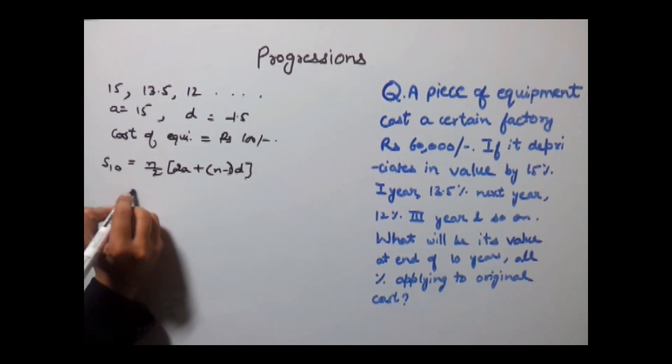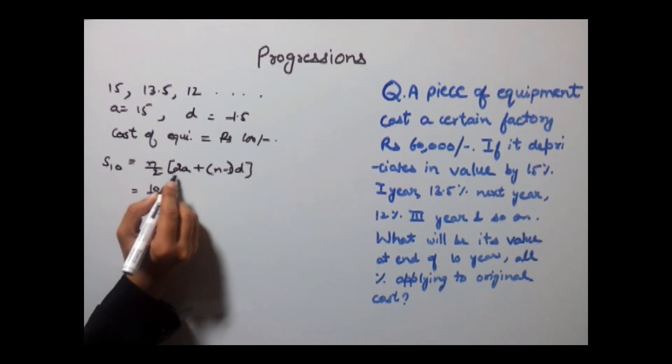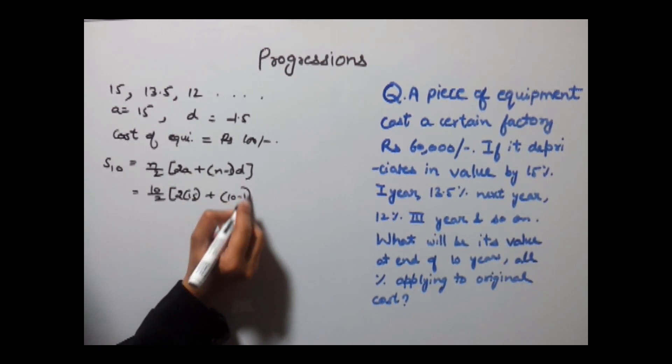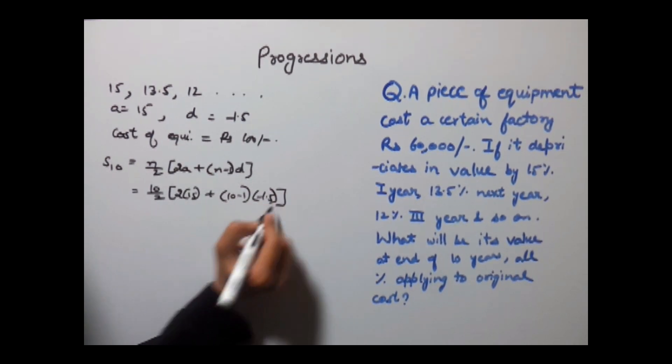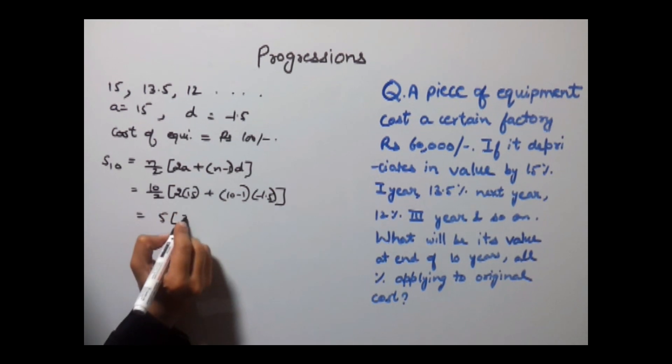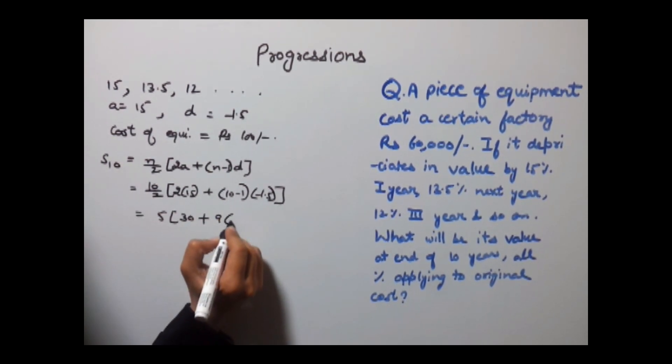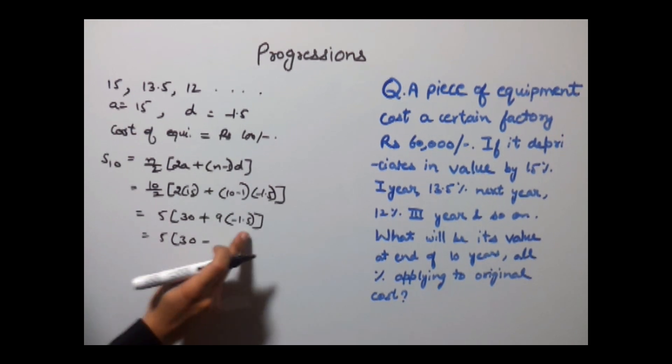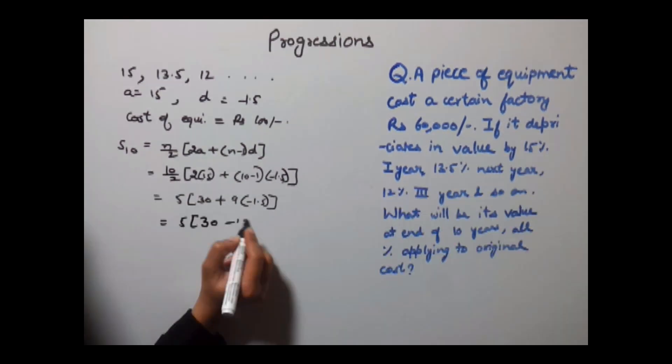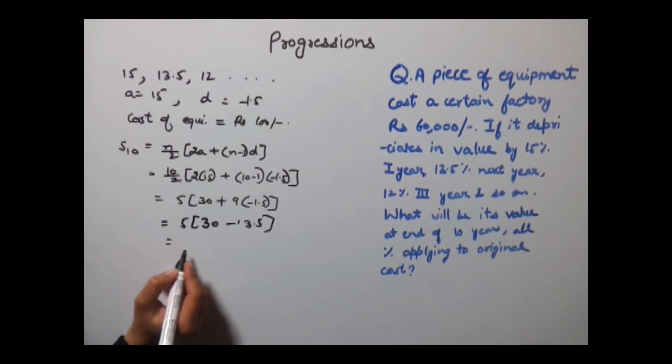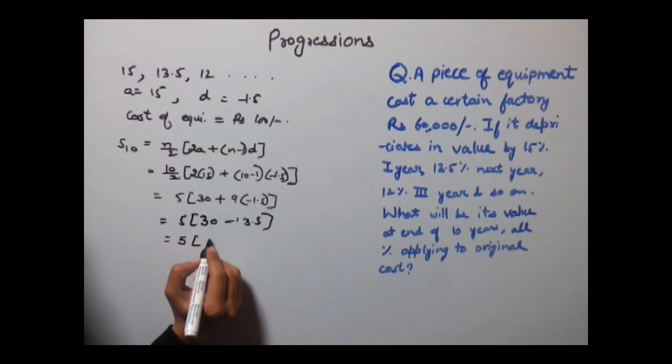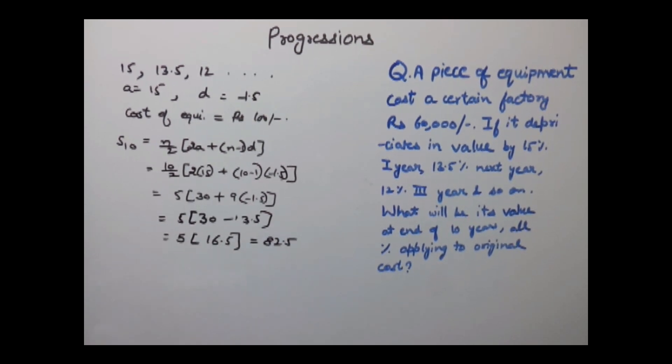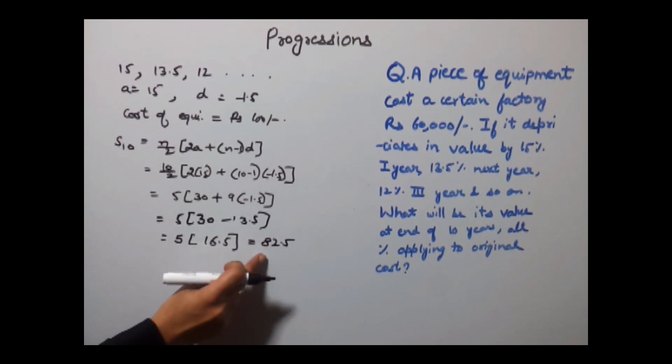This is the formula to calculate sum in AP. Here N is 10, 2 into A - A is 15 - 2 into 15 plus N is again 10, D is minus 1.5. This will give 5, 2 into 15 is 30 plus 9 into minus 1.5. 9 into 1.5 gives us 13.5, which will give us 30 minus 13.5 is 16.5, which equals 82.5. This is the sum of all the depreciation.